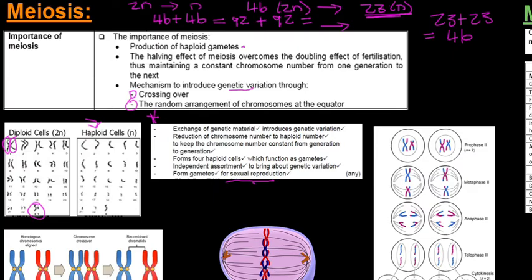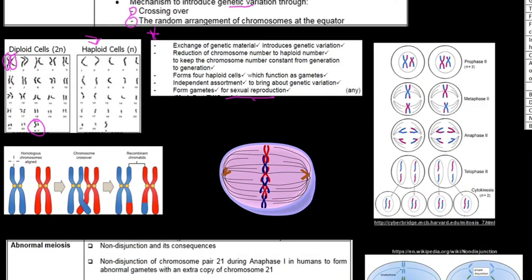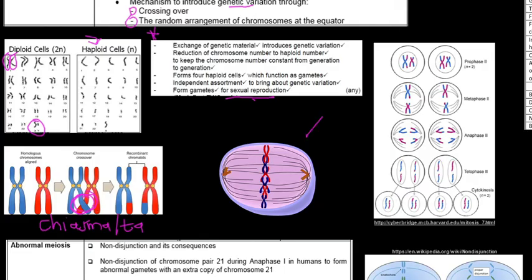One thing to add regarding homologous chromosomes and the process of crossing over: the area where chromosomes lie as bivalent pairs and are physically touching has a name — it is called the chiasma, or chiasmata (plural). You just need to know what we call that area. Then there is the process of random arrangement during metaphase, where chromosomes randomly arrange at the equator, thus contributing to genetic variation.